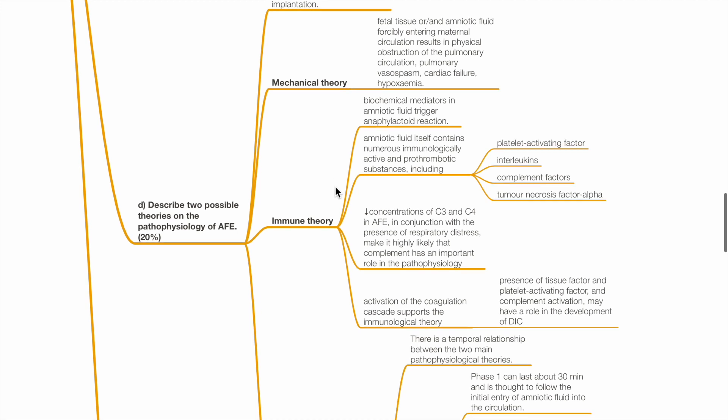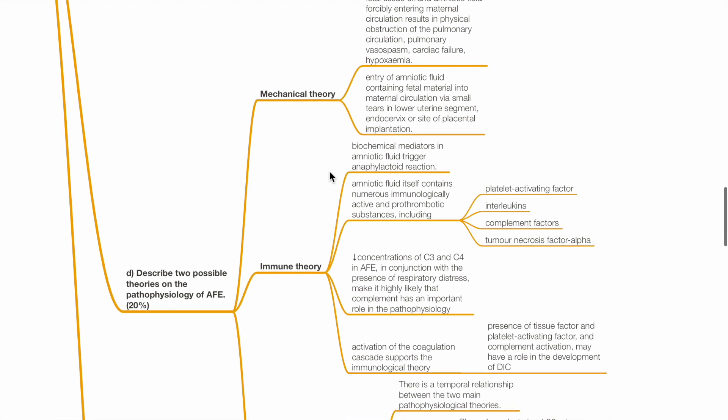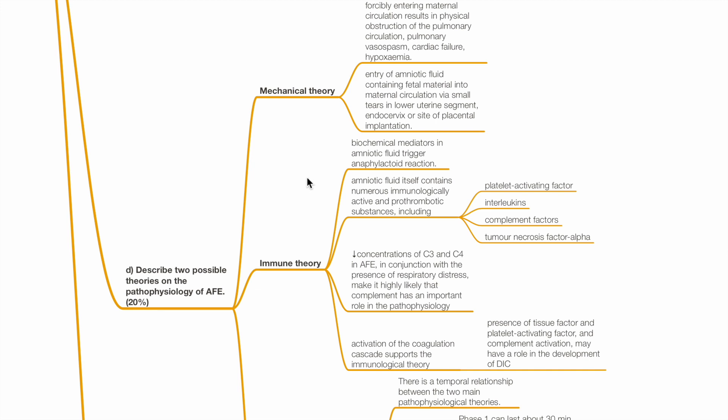Part D: Describe the two possible theories on the pathophysiology of AFE. The mechanical theory states that fetal tissue and/or amniotic fluid forcibly entering the maternal circulation leads to physical obstruction of the pulmonary circulation, leading to pulmonary vasospasm, cardiac failure and hypoxaemia. Entry of amniotic fluid containing fetal material into the maternal circulation may be via small tears in the lower uterine segment, endocervix or site of placental implantation.